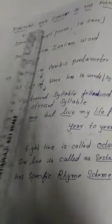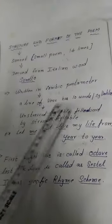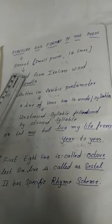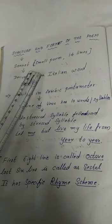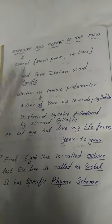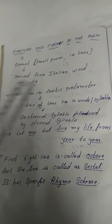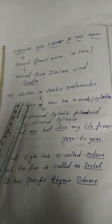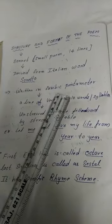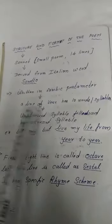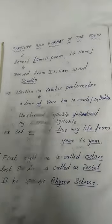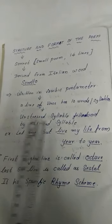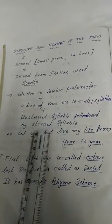Now we will see the structure and format of the poem. This poem is written in the form of a sonnet. A sonnet is a small poem which has 14 lines, derived from the Italian word 'sonnato.' This poem is written in the form of iambic pentameter. A line of verse has 10 syllables, where the syllables will be unstressed syllables followed by stressed syllables.